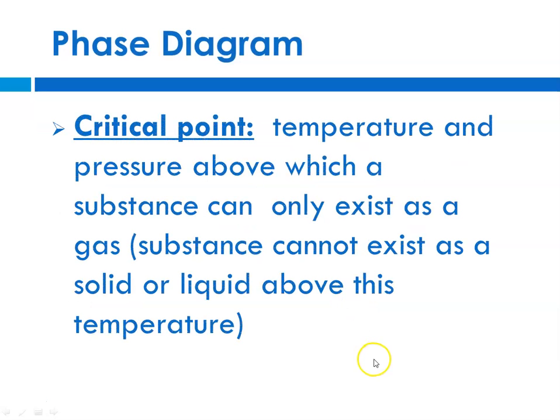And then we have the critical point, and that is the temperature and pressure that correspond to that critical point beyond which the substance can only exist as a gas. So again, it cannot exist as a solid or liquid above that temperature and pressure.